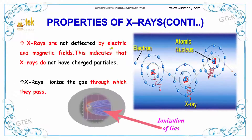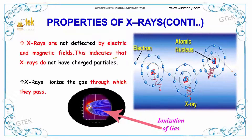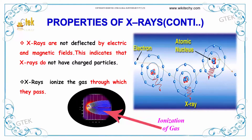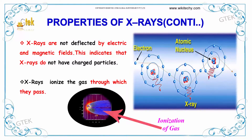X-rays are not deflected by electric and magnetic fields, which indicates that X-rays do not have charged particles. X-rays also ionize the gas through which they are passed.